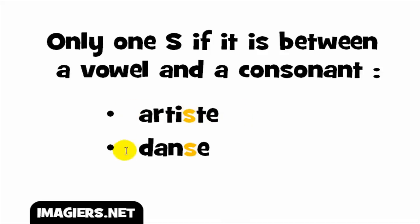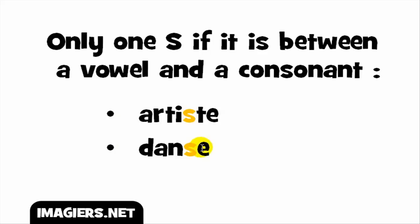And here it's the opposite, because you start with a consonant and then after that you get a vowel. But still it's the same way of pronouncing it — it's S. And then you get the sound — danse. So: artist and danse.